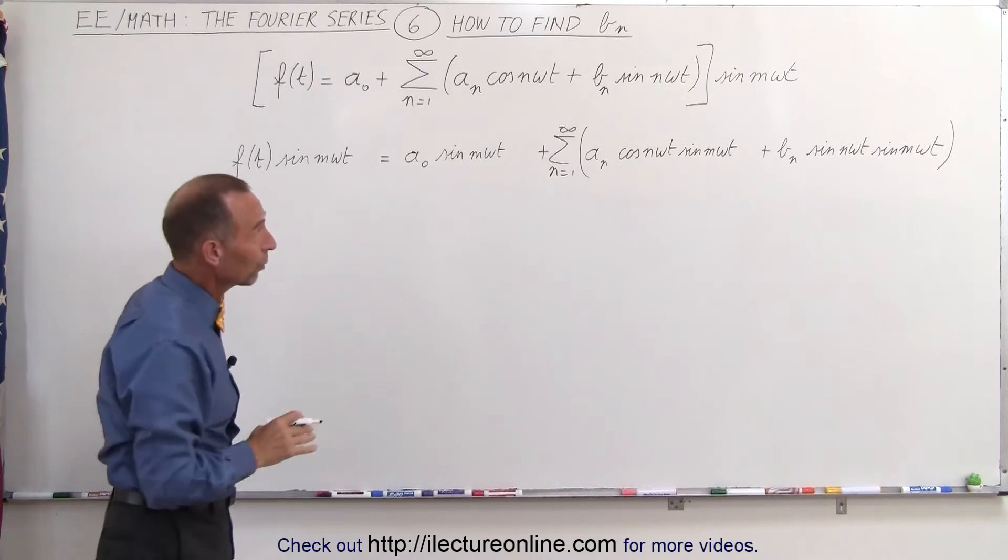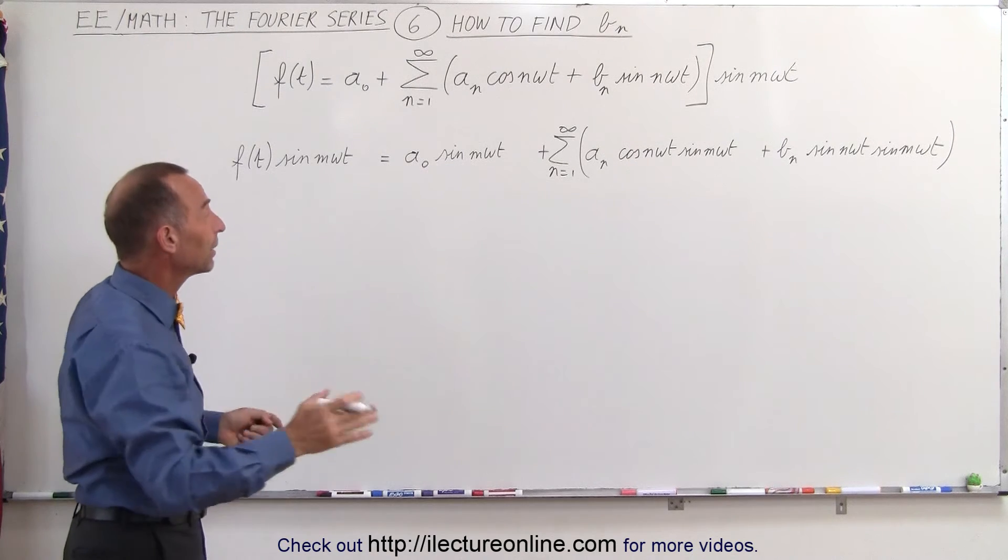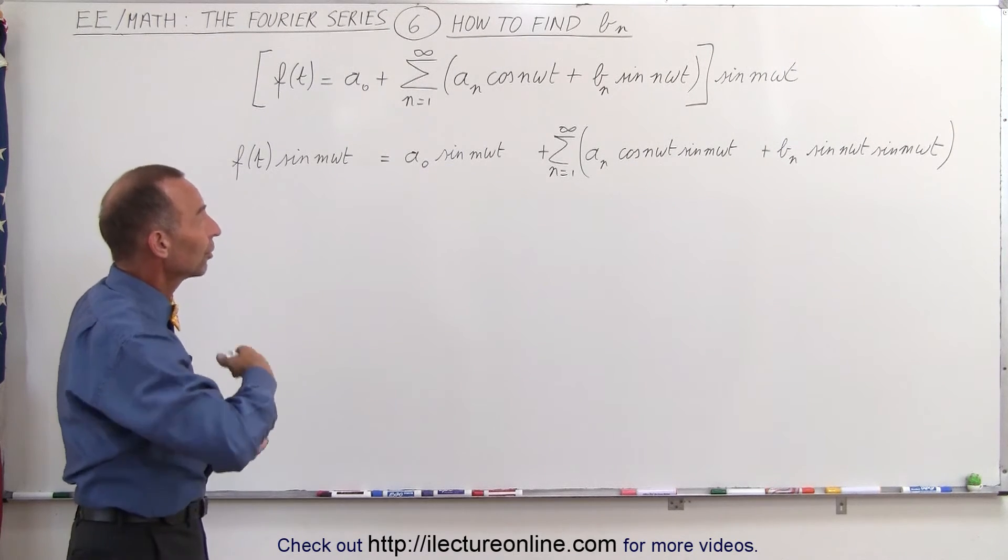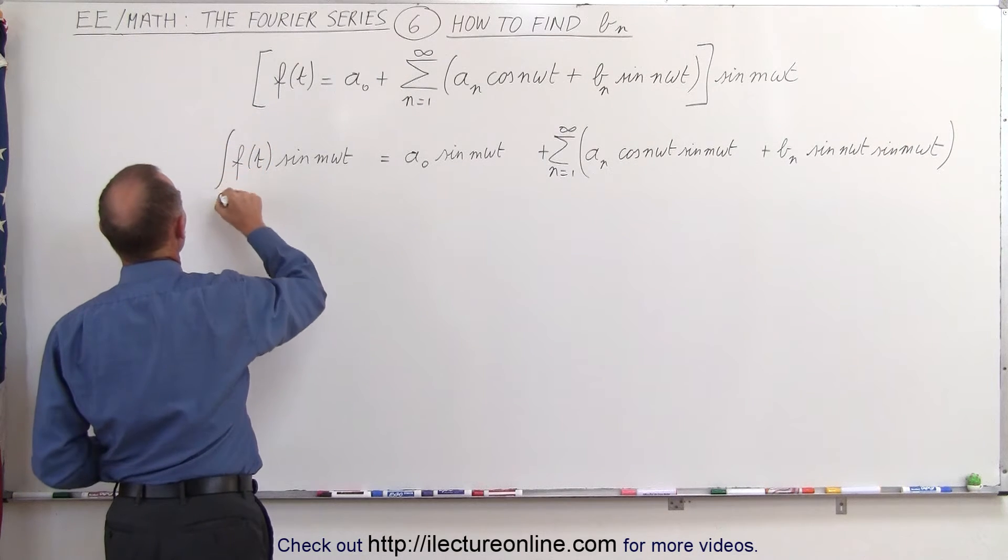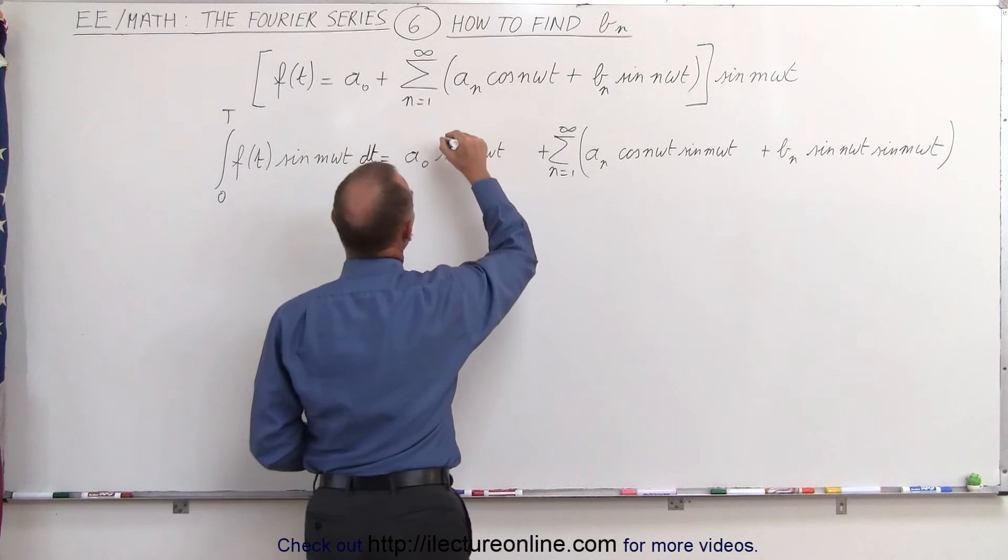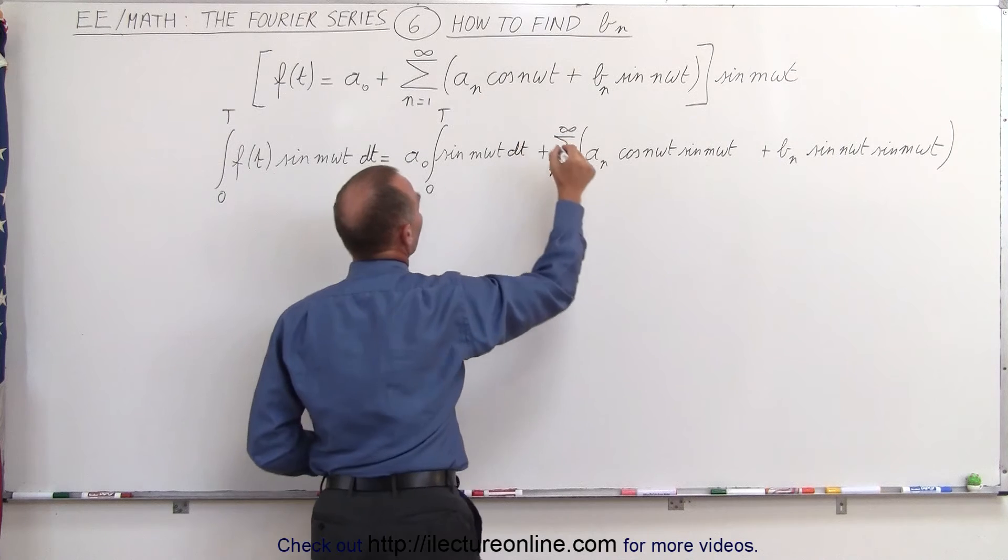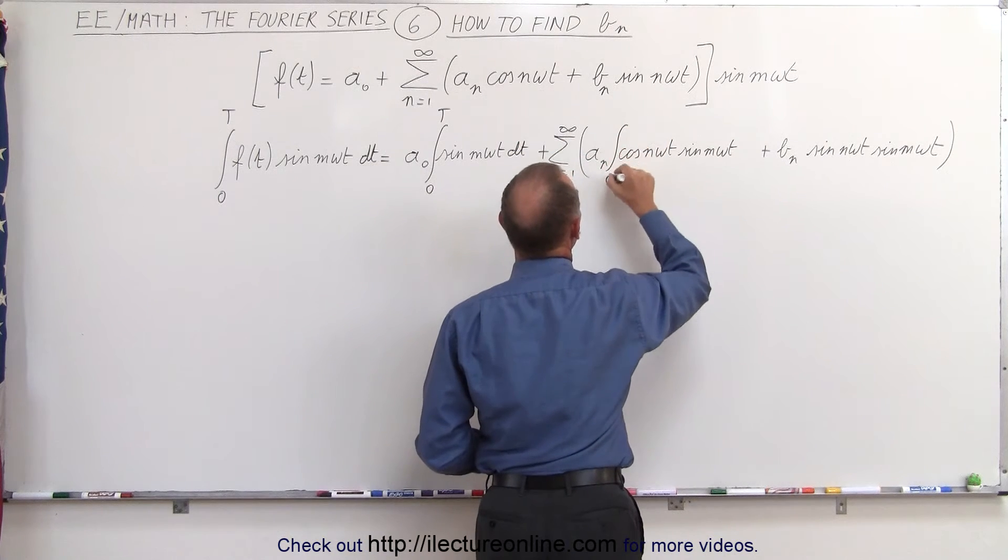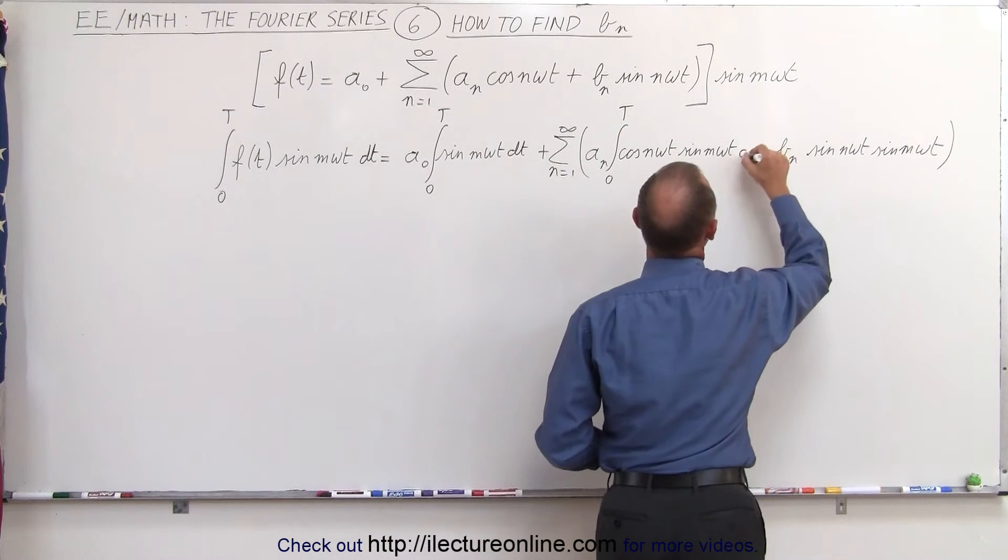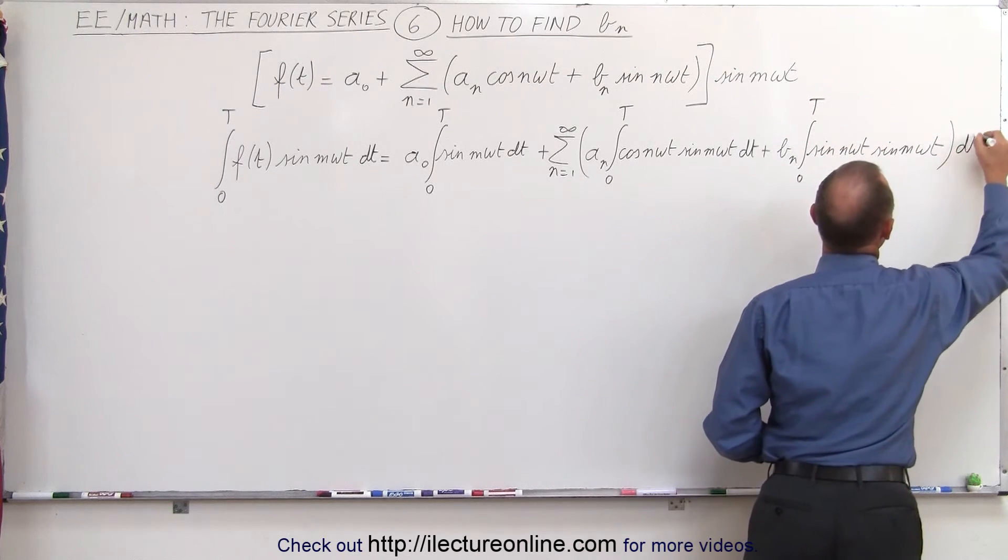So we multiply both sides of the equation by the sine of m omega t. Now the next thing we're going to do is integrate both sides from 0 to T, one period. So we integrate from 0 to T, of course we need a proper dt here. We're going to integrate this from 0 to T and we need a dt, and we're going to integrate this from 0 to T, we need a dt, and here we're going to integrate this from 0 to T, and we need a dt.